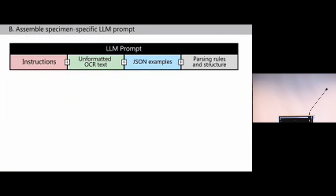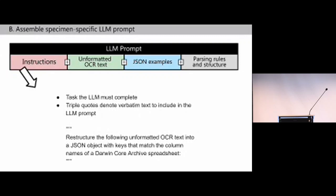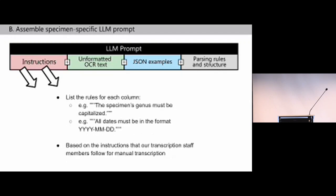Large language models require a prompt. For VoucherVision, we dynamically assemble prompts for each individual image, comprised of instructions, the unformatted OCR text, JSON examples, and parsing rules in a final structure. Instructions are basically the tasks that the large language model must complete—we're telling it to restructure the unformatted OCR text into a JSON object with specific headers. We also add more specific rules such as column-based rules: for example, the genus must be capitalized or all dates must be in a specific format. These are based on the instructions our transcription staff follow for manual transcription, slightly adapted for our large language model prompts.